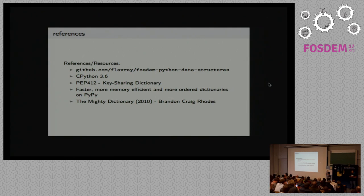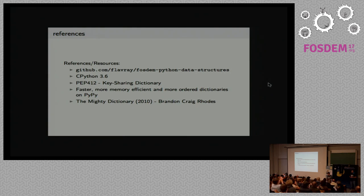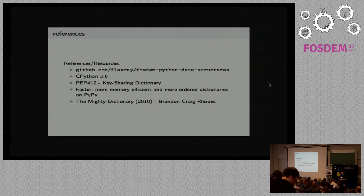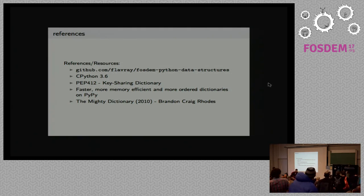And well, that's it. You can find the slides on the first link, and here are all the references I used for this presentation. I really encourage you to take a look at CPython 3.6 code. Even though it's C, it might seem hard to understand at first glance, but it's really well documented and easy to read, so just give it a look. Thanks for listening. I also want to thank all the FOSDEM staff for organizing everything.